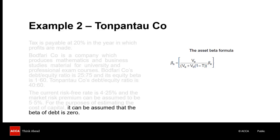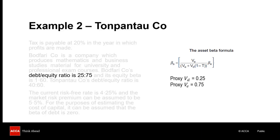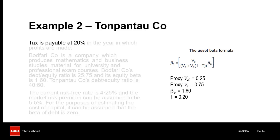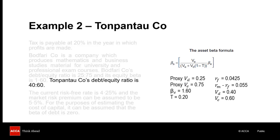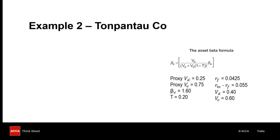Extracting the key inputs, we have the proxy company's debt equity ratio of 25:75, the equity beta of 1.6, the tax rate of 20%, the risk-free rate of 4.25%, and a market risk premium of 5.5%. We can also extract Tompantarko Co's own debt equity ratio, which is 40:60. Based on the data extracted from the scenario, we can calculate the proxy company's asset beta using the asset beta formula, and that gives an asset beta of 1.263.